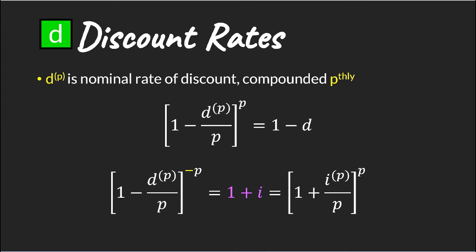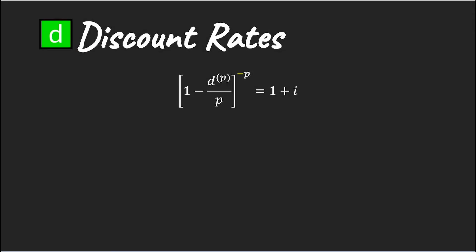Now, we understand how our interest rates relate to our force of interest, but what about our discount rate? Now, we use this important relationship, which shows our nominal discount rate in terms of our effective interest rate. And what we're also going to do here is we want to see what happens to d_p as p gets larger and larger. So we do just that.